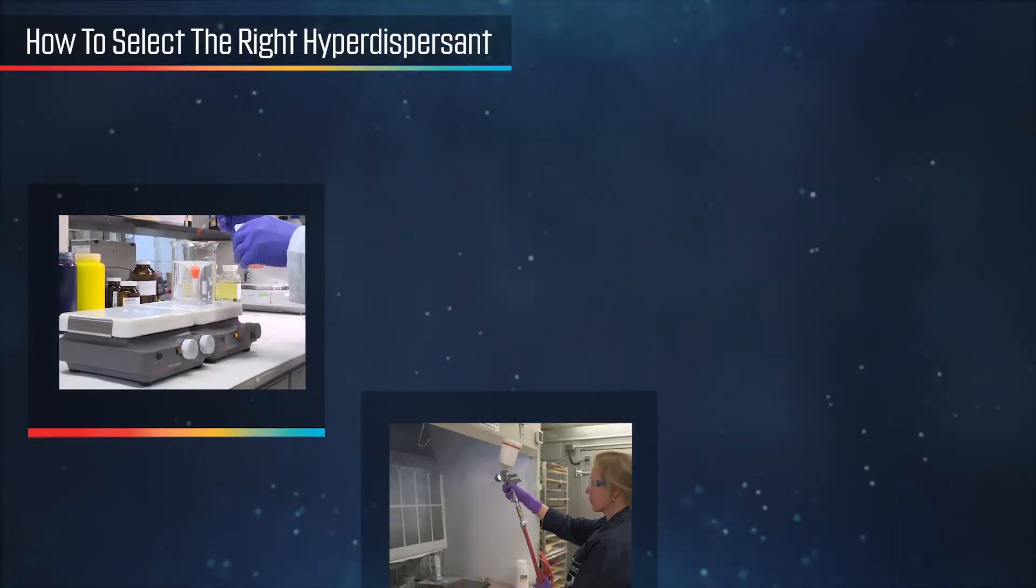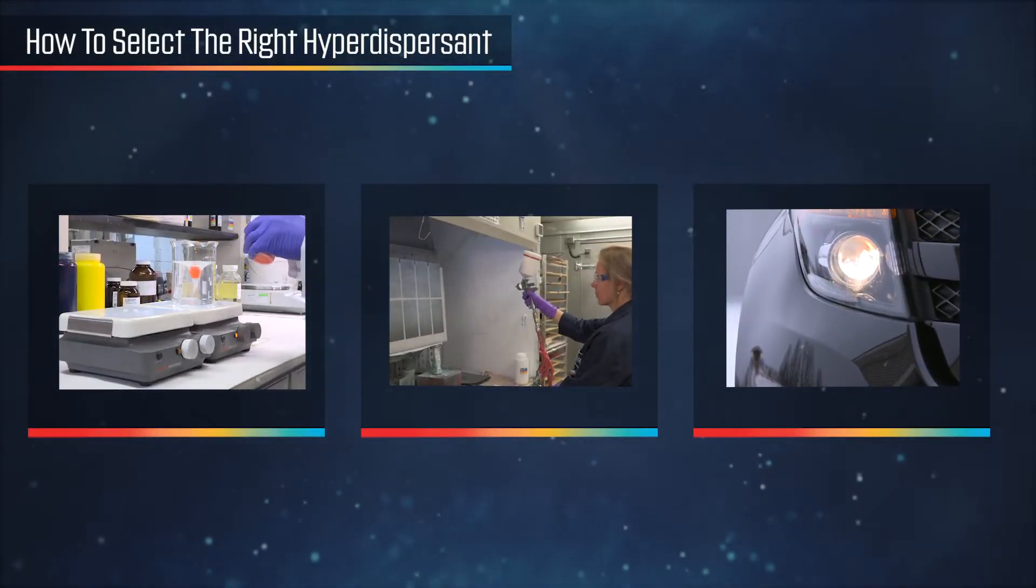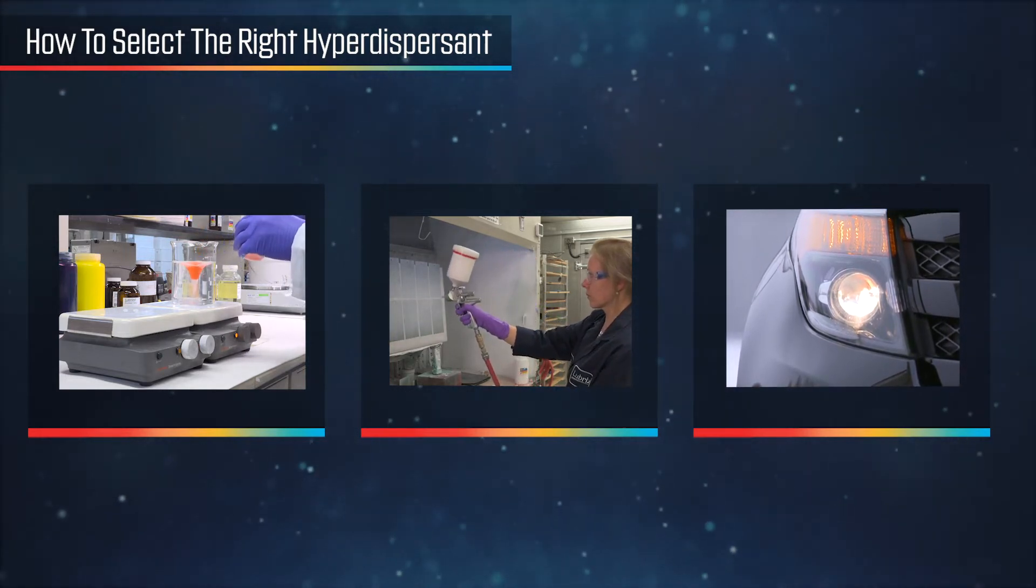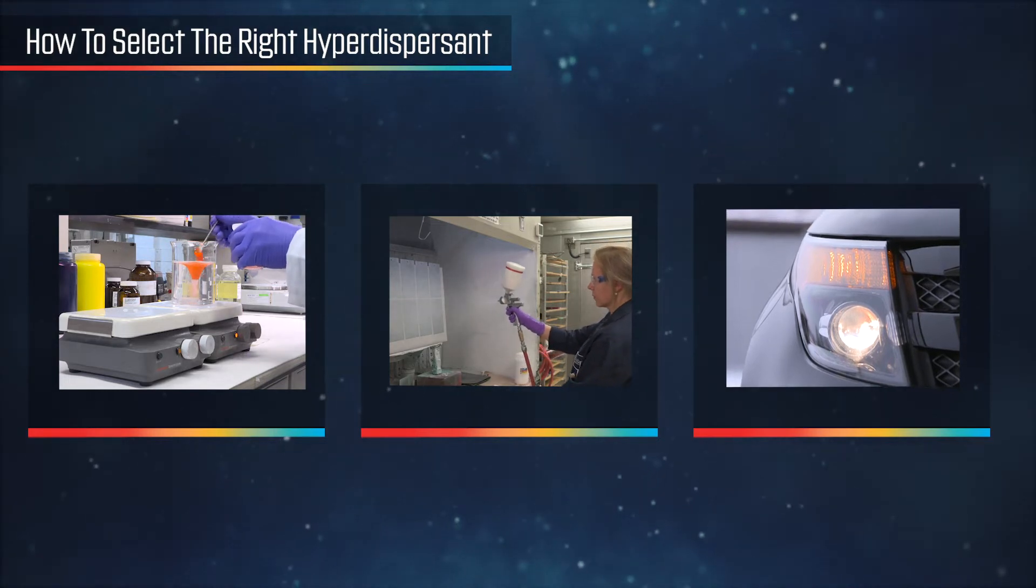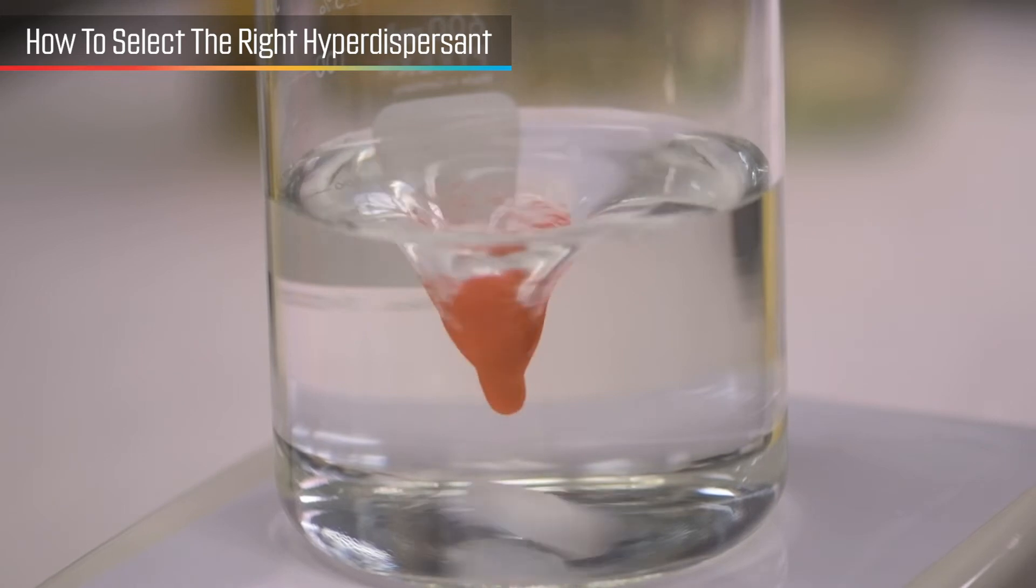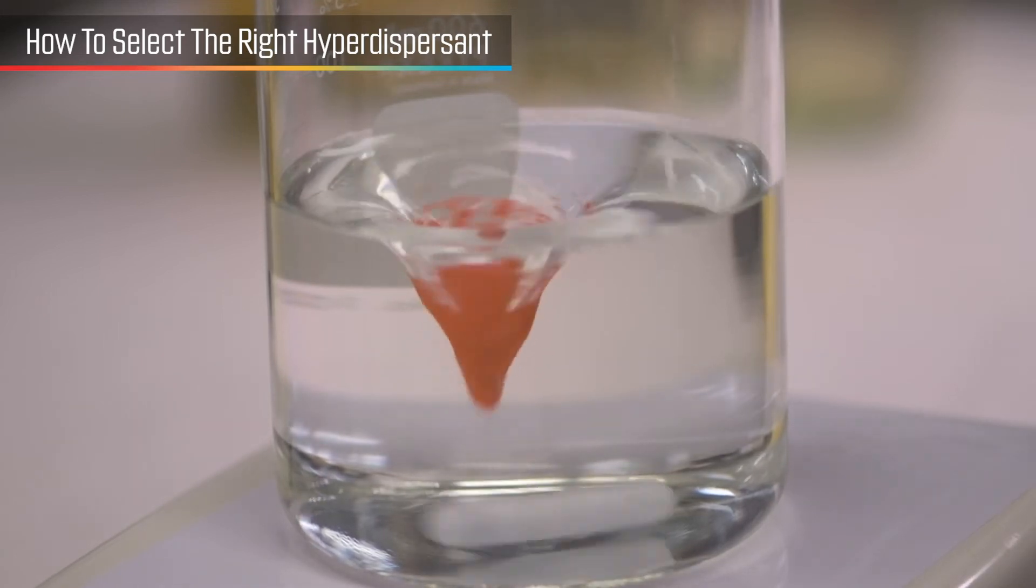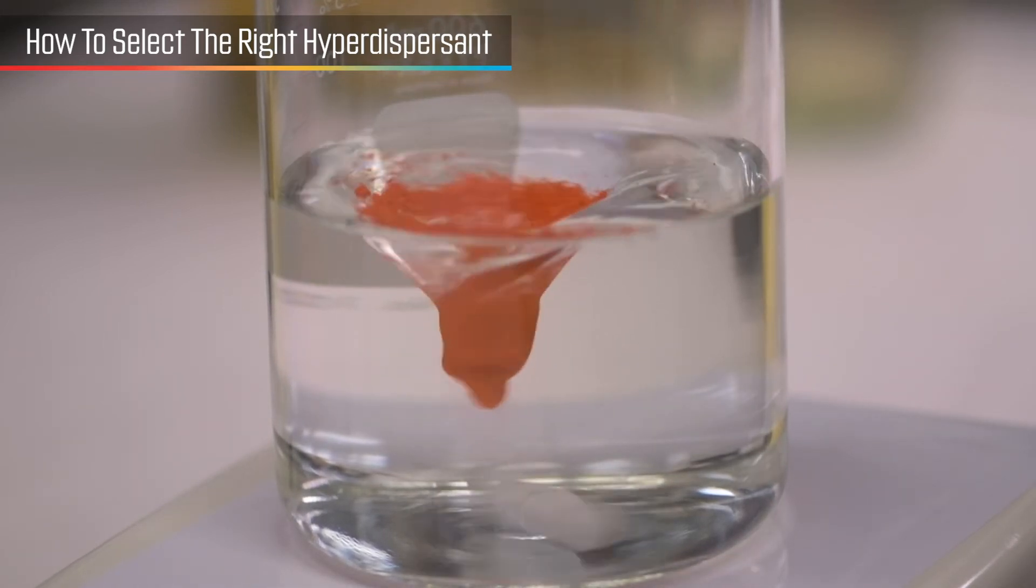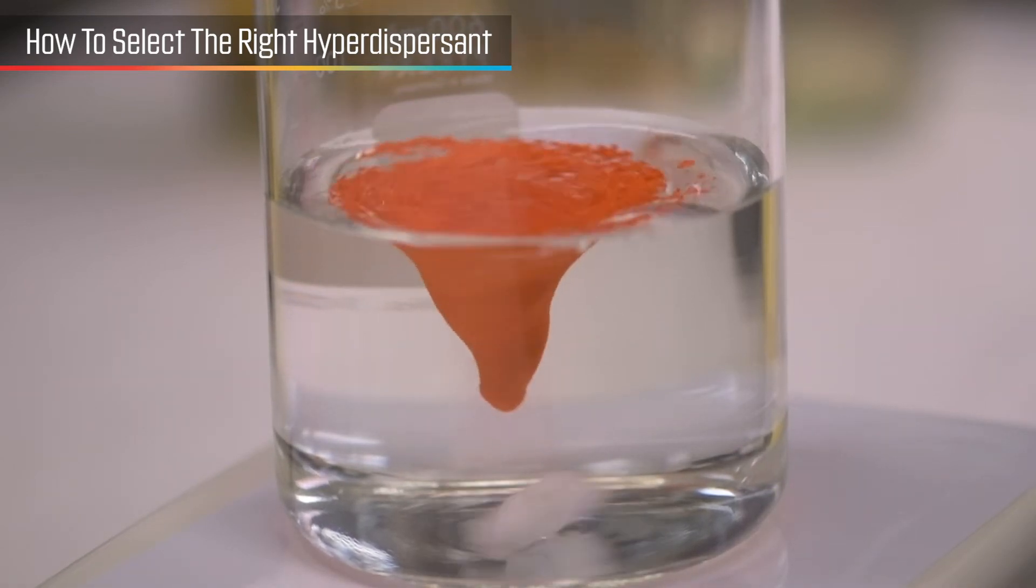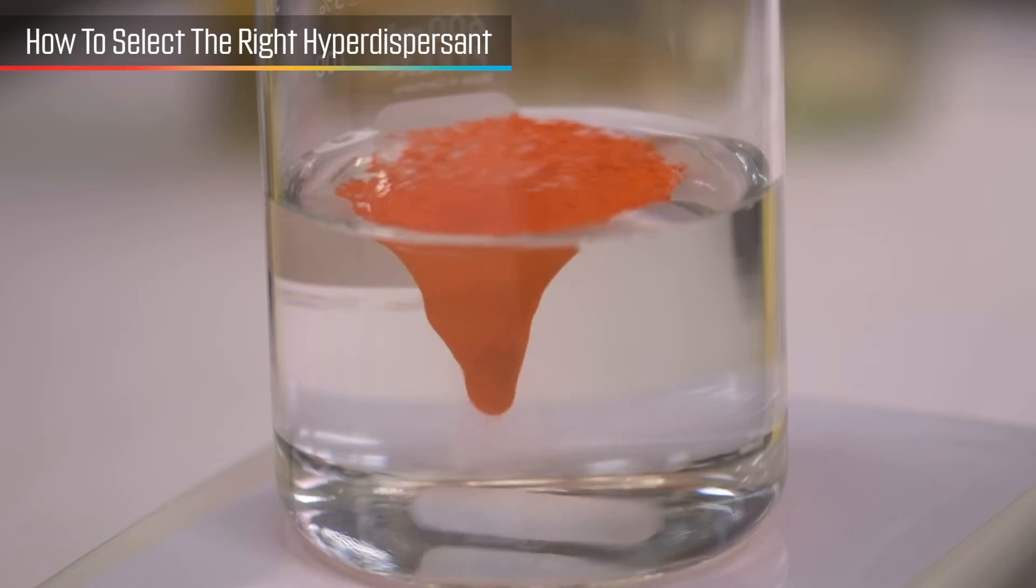When choosing the right dispersant, there are several key factors to consider. A dispersion typically consists of pigments or fillers, solvents, resins, and dispersant. The first factor in choosing the right dispersant is the type of particle being dispersed: organic, carbon black, inorganic, or fillers. Each one has a different surface chemistry and structure.